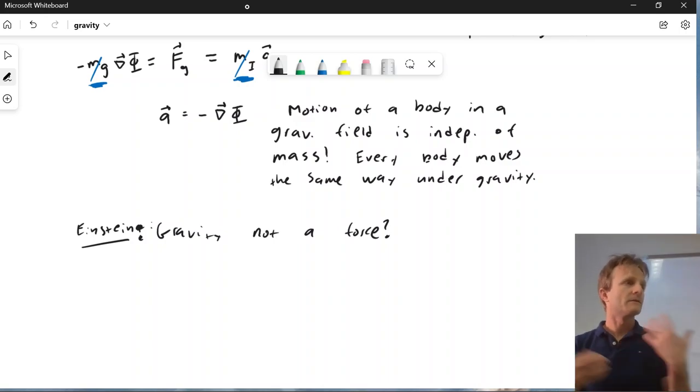So Einstein's big idea is that maybe gravity isn't a force. And that's what we're going to see. We're going to see gravity is, in some sense, just the effects of the curvature of space-time on a body free of force.